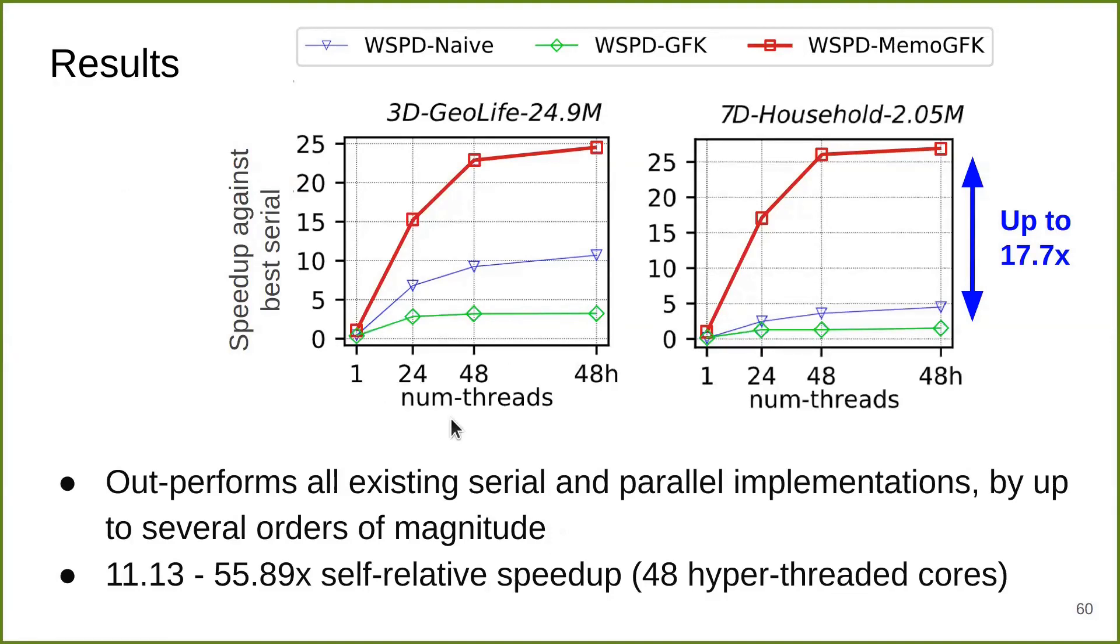Here are our results comparing these three methods. The two plots show two different datasets of different dimensionality and sizes. The x-axis shows the number of threads. The H here after 48 refers to hyperthreading. For the y-axis, we show speedup against the best serial algorithm. In our experiments, the best serial algorithm is actually our parallel algorithm running on one thread. The higher the line, the better the method. As we can see here, the red line is highest among all the lines, corresponding to our best WSPD-MemoGFK method. It is up to 17.7 times faster than the other baseline method running on all the threads.